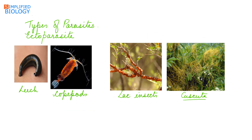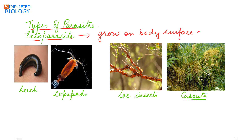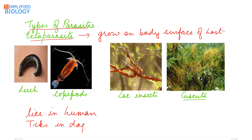The first type of parasite is the ectoparasite. Ectoparasites grow on the body or the outer surface of the host. Examples include lice in humans, ticks in dogs, leeches, and copepods on marine fish.